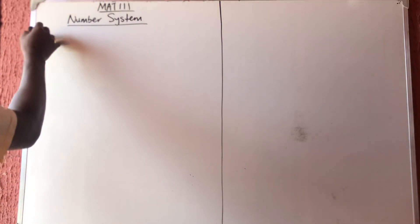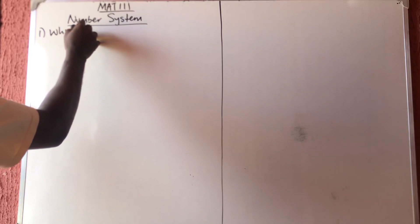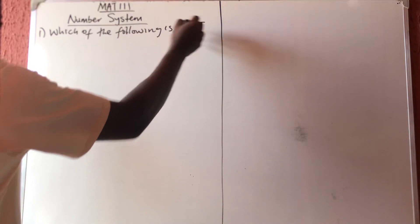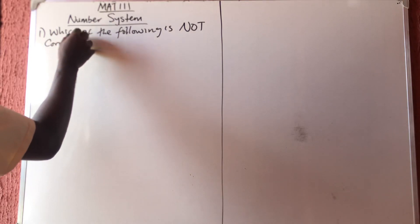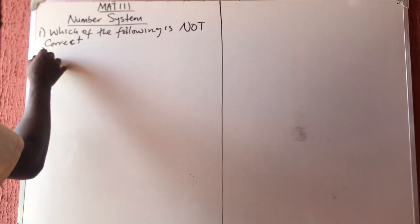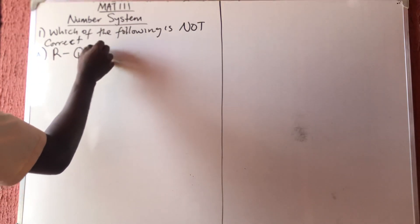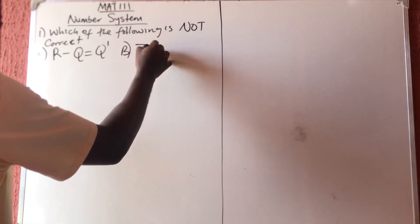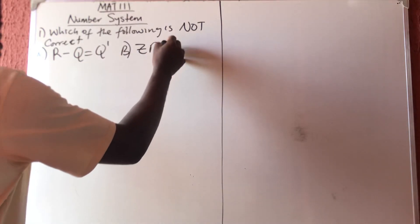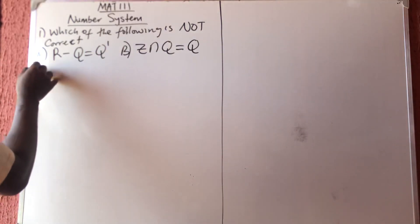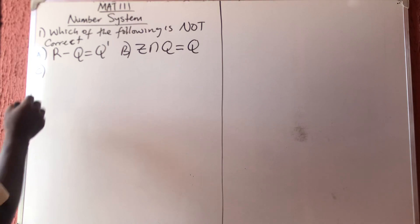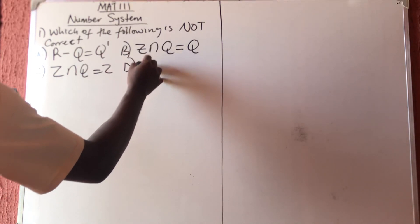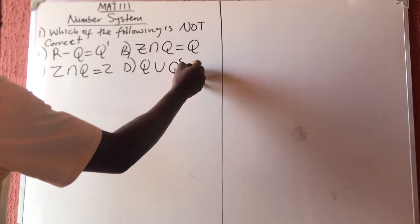The first question asks: which of the following is NOT correct? Option A says R minus Q is equal to Q prime. Option B says Z intersection Q is equal to Q. Option C says Z intersection Q is equal to Z. Option D says Q union Q complement is equal to R.